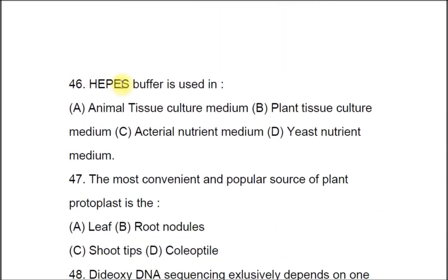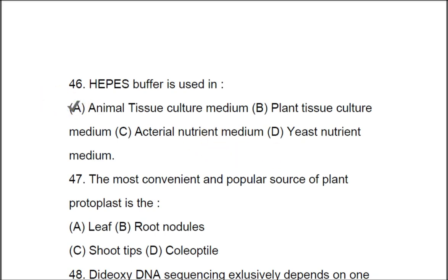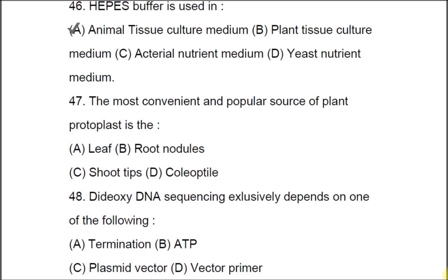Question 46: HEPES buffer is used in A) animal tissue culture medium, B) plant tissue culture medium, C) bacterial nutrient medium, D) yeast nutrient medium. The correct answer is A, animal tissue culture medium.